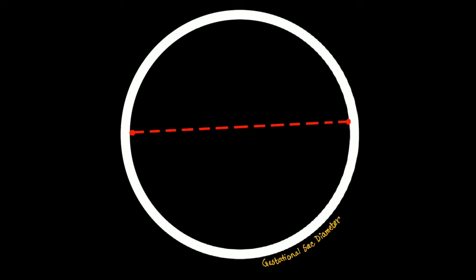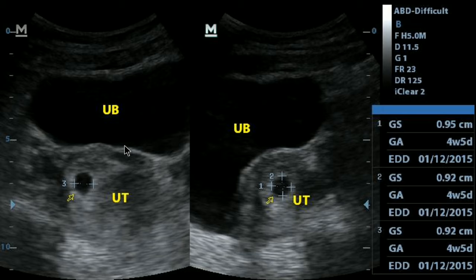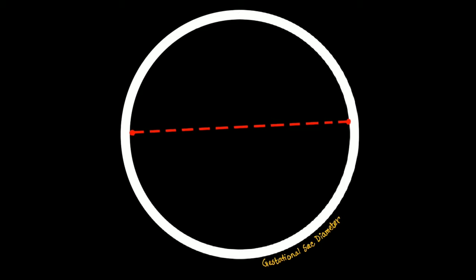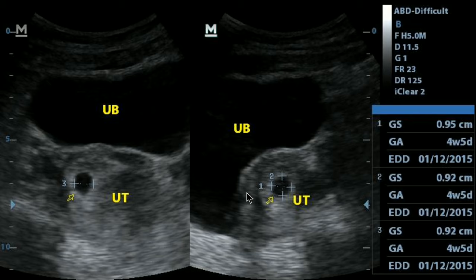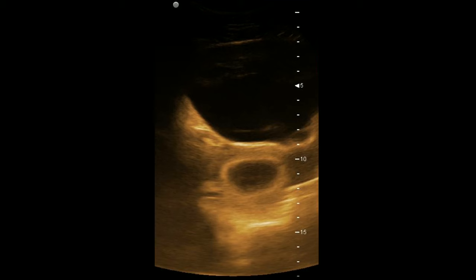Firstly, the gestational sac diameter. At the 5th or 6th week, you can get the gestational sac as a round cystic structure on longitudinal or transverse view. Click on the GSD or GS button of your machine and measure a diameter of the sac from inner border to inner border — this is the gestational sac diameter. Remember that we measure lumens inner to inner and solid structures outer to outer. I have measured inner to inner by pressing the GS button. All measurements showed the sac size of 9 mm, corresponding to 4 weeks and 5 days of gestation.